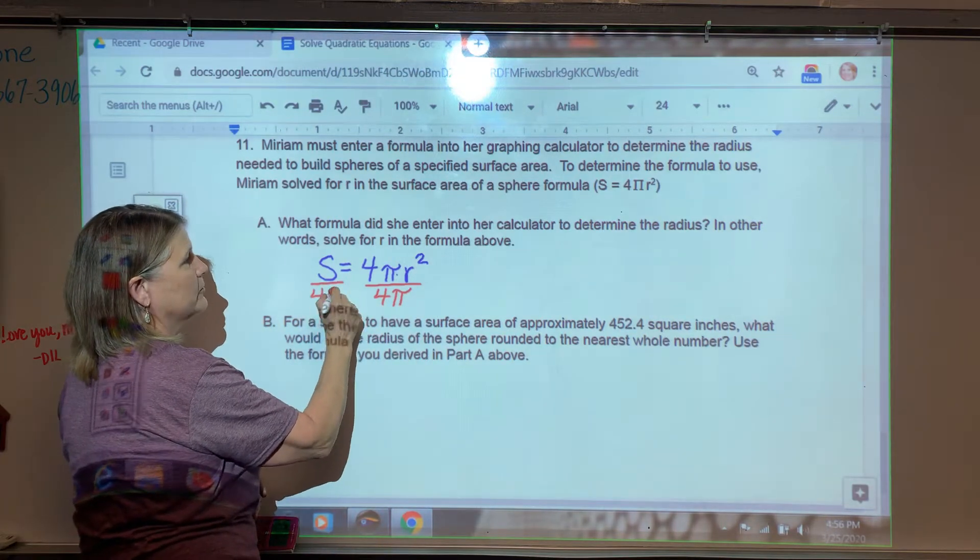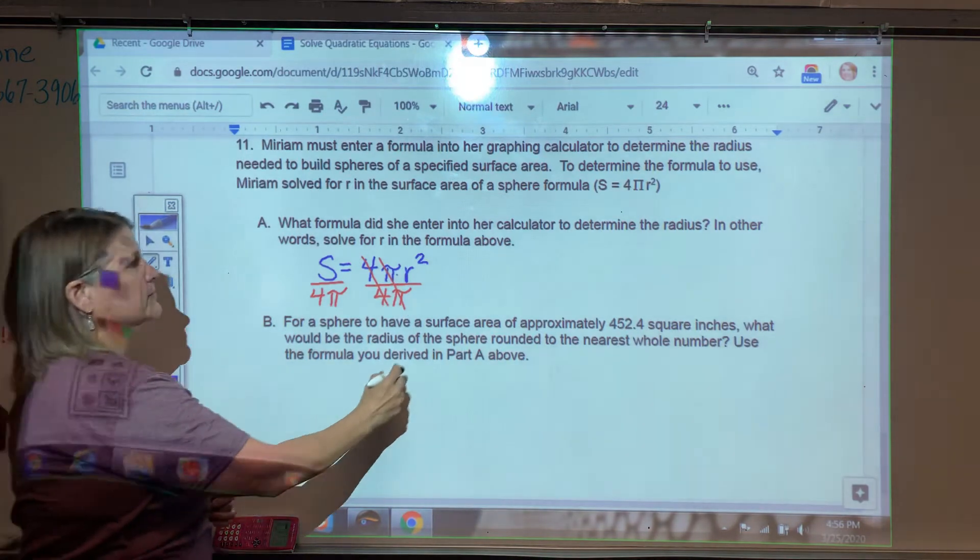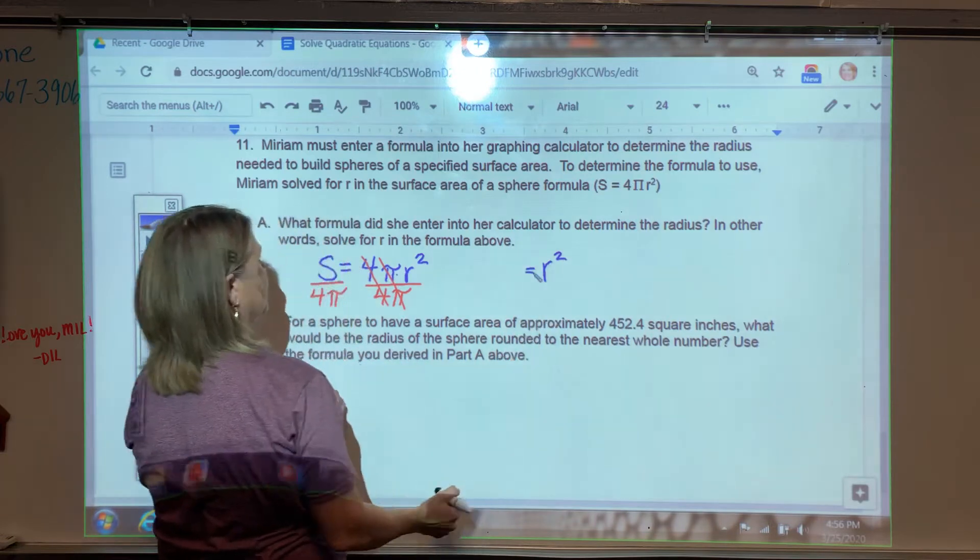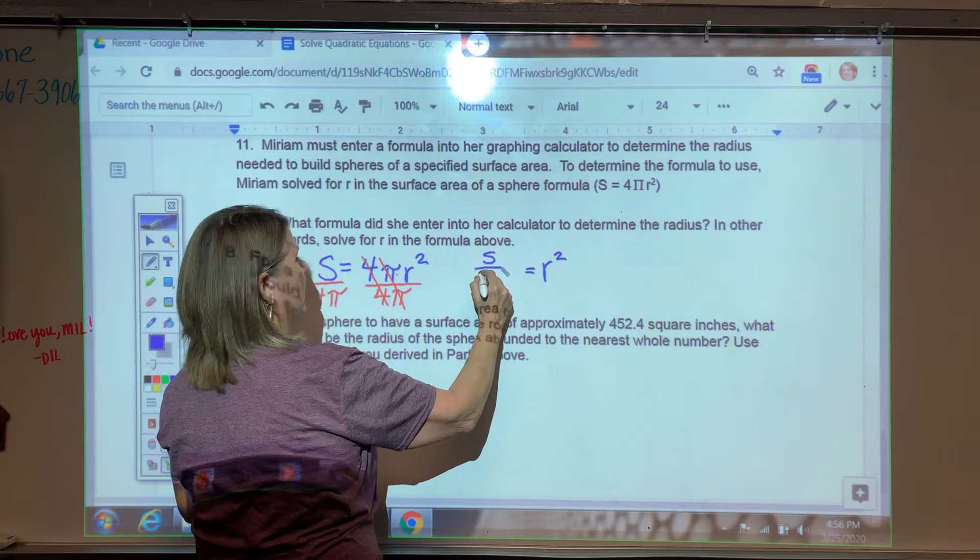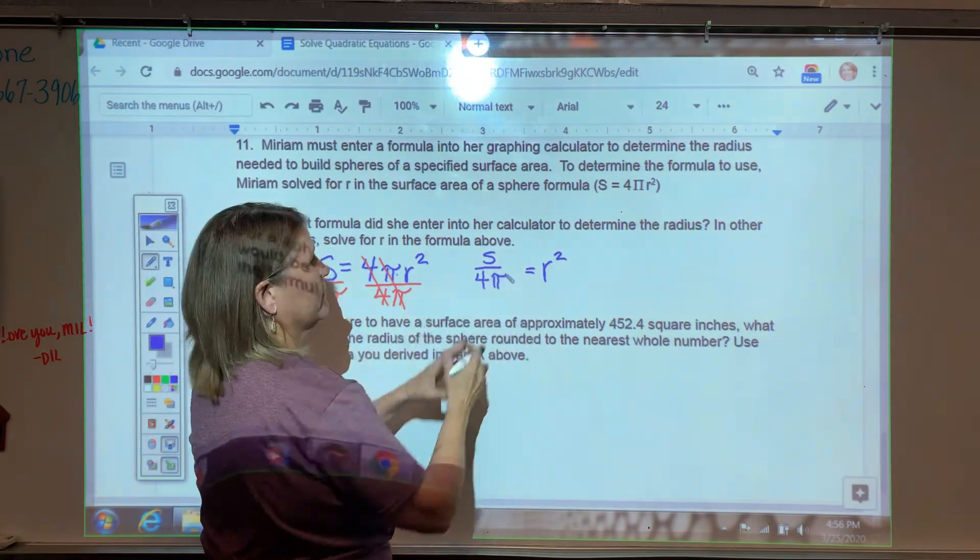But what I do on one side will do to the other. So both the 4 and the pi cancel. And what that leaves us with is this. I have R squared now all by itself over here. And that looks strange, but we're going to leave it in that format because we just don't have a way of simplifying it. It's S over 4 pi. That's kind of a cleaned-up version.